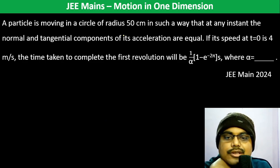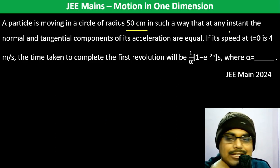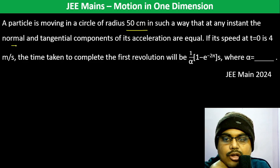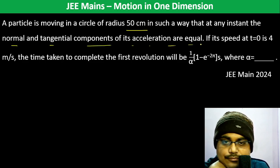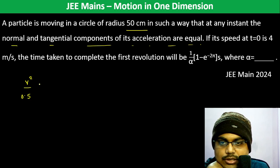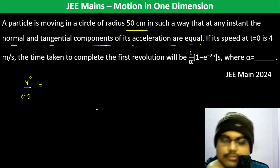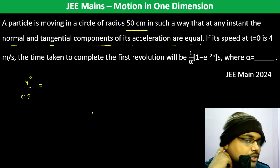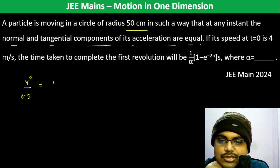A particle is moving in a circle of radius 50 centimeters, such that at any instant the normal and tangential components of its acceleration are equal. So v² / R, which is v² / 0.5, is equal to the tangential acceleration.